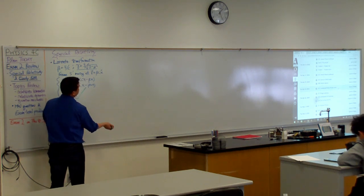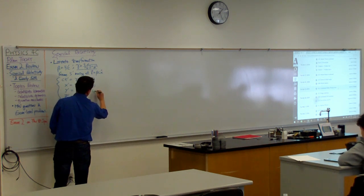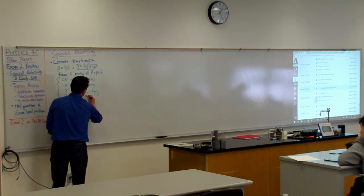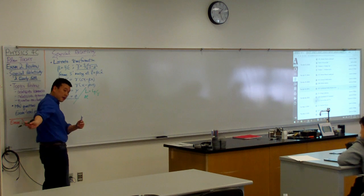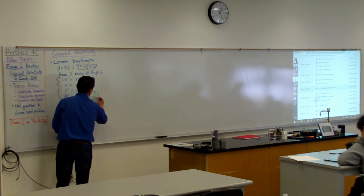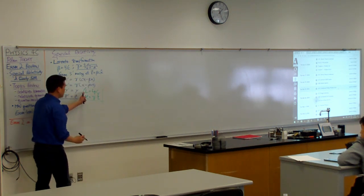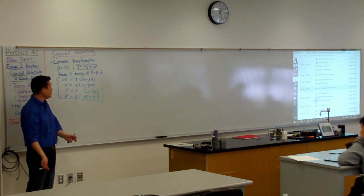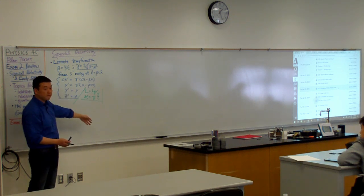The length contraction says that length of the ruler you measure is the proper length divided by gamma, and the time dilation says that the amount of time passage that you measure over a clock that's moving relative to you is gamma times the proper time that the clock measures. These are special case formulas. They apply for the situations where they were derived, and whatever problem you have, if you recognize that as exactly that situation, then sure, use them.